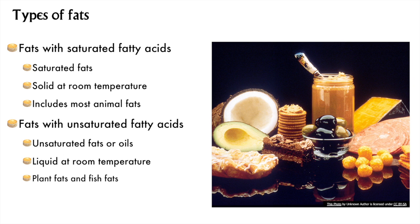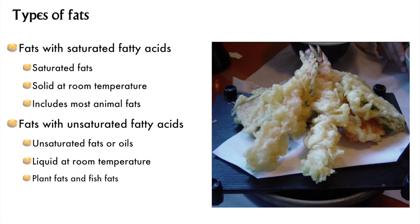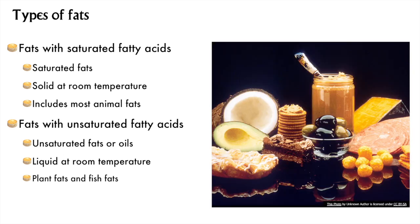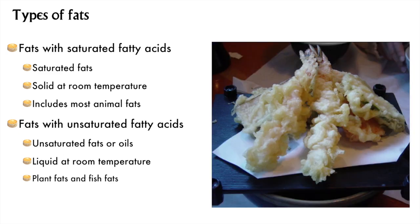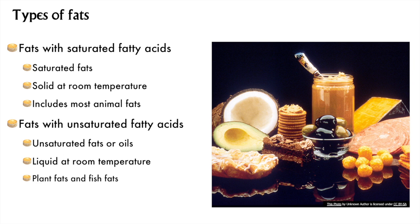If a fat has saturated fatty acids, the result is a saturated fat. Saturated fats are solid at room temperature. Common dietary animal fats are saturated. Unsaturated fats have unsaturated fatty acids, which are usually liquid at room temperature, and these include vegetable oils and fish fats.